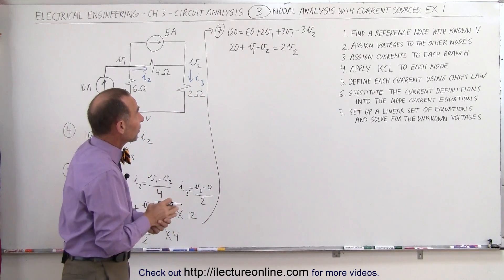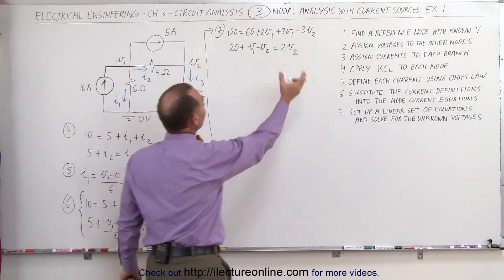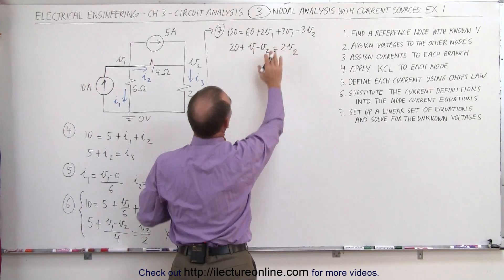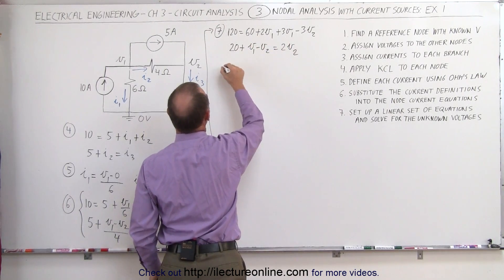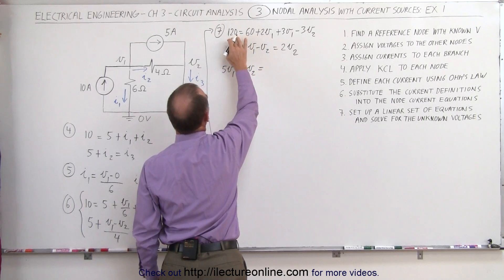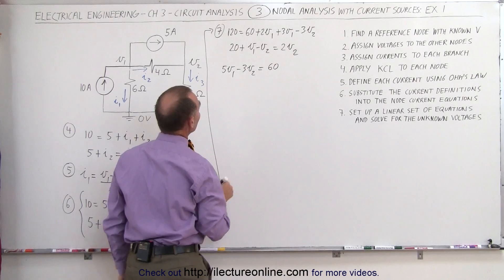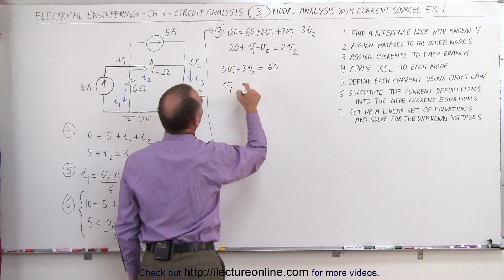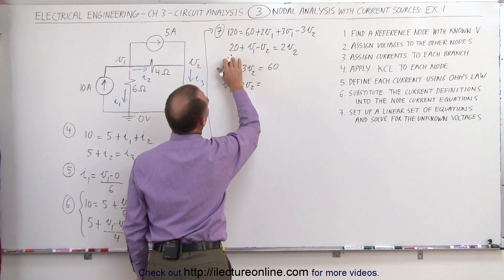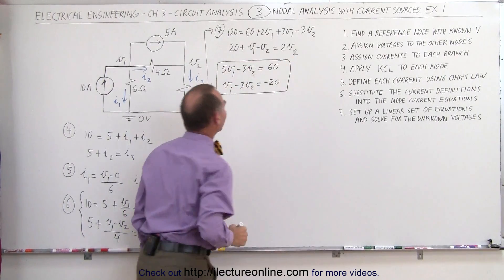Rearranging into standard linear format with all V's on one side and constants on the other, the first equation becomes 5V1 minus 3V2 equals 60. The second equation becomes V1 minus 3V2 equals minus 20. These are the two equations we need to solve simultaneously for V1 and V2.